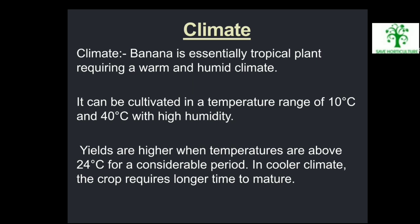Climate: Banana is essentially a tropical plant requiring a warm and humid climate. It can be cultivated in a temperature range of 10°C to 40°C with high humidity. Yields are higher when temperatures are about 24°C for a considerable period. In cooler climates, the crop requires a longer time to mature.